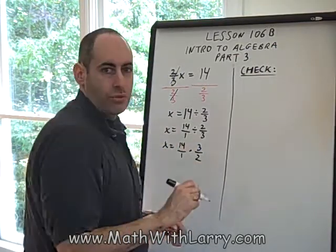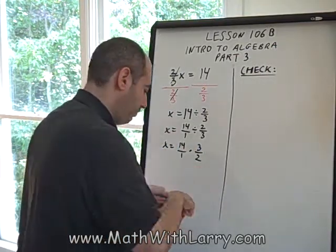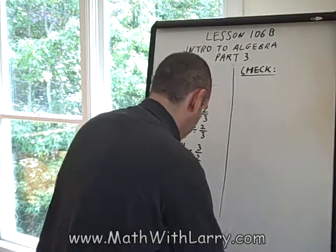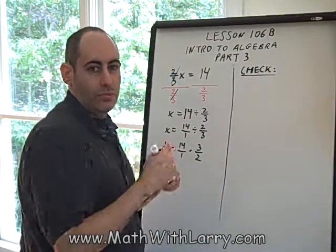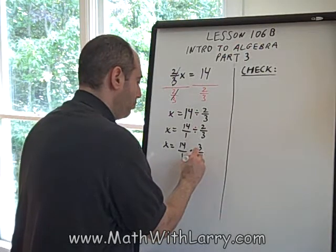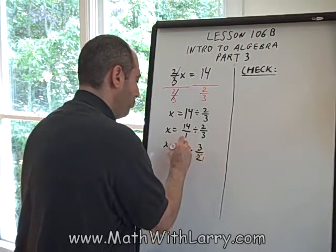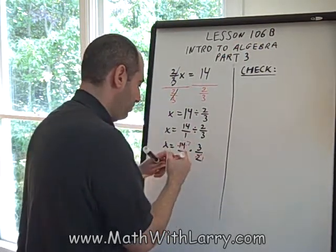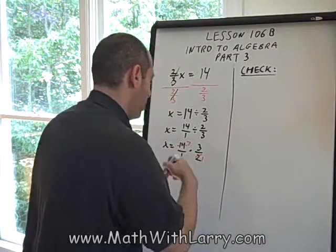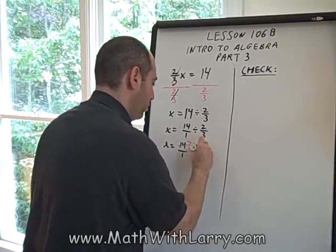Now, we multiply across, but before we do that, hopefully you remember that we're allowed to do some, what we call cross-cancelling. Basically, two goes into two once, two goes into 14 seven times. We now have seven times three, multiplying across, which is 21.